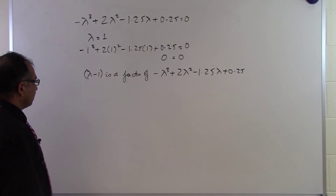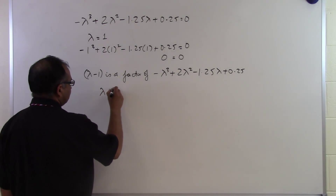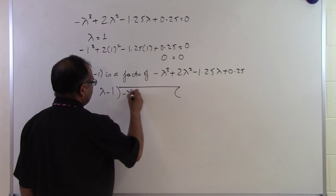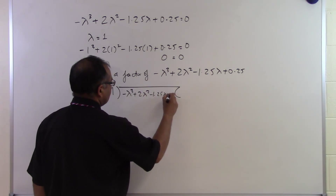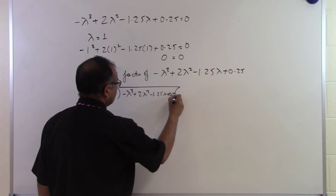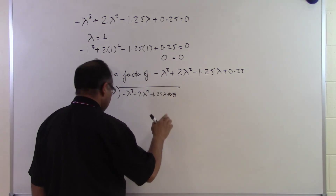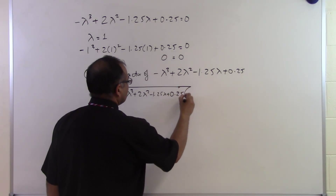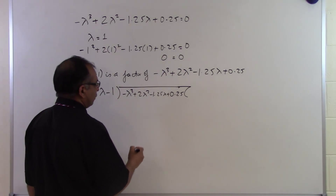So what that means is that lambda minus 1 is a factor of minus lambda cubed plus 2 lambda squared minus 1.25 lambda plus 0.25. If lambda minus 1 is a factor, we can always perform long division. Let's go ahead and do it.